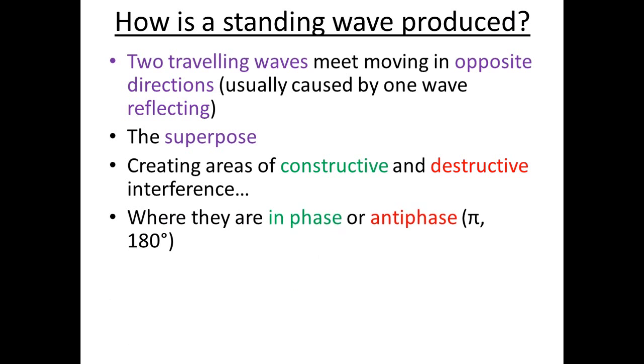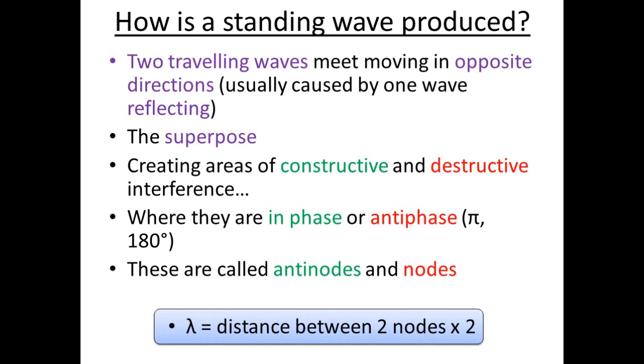Where they are in phase, this is constructive interference. And where they are antiphase, out by pi radians or 180 degrees or half a wavelength or half the time period, this is destructive interference. These areas are called antinodes for their in phase, and nodes, the stationary nodes, the points that don't move on the standing wave, are where they're destructively interfering.